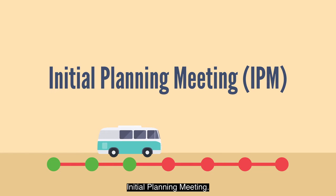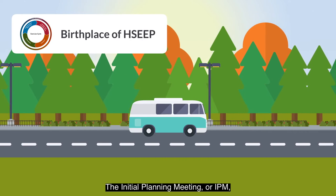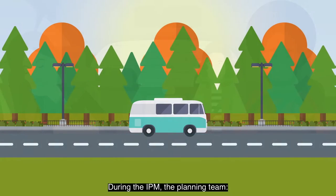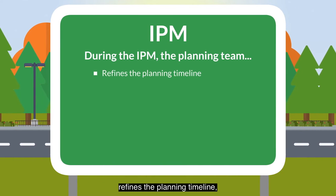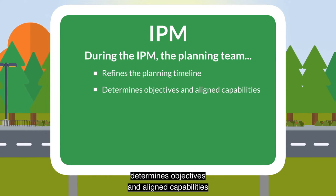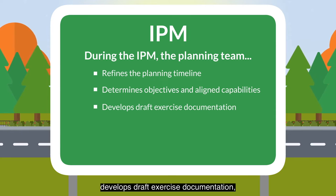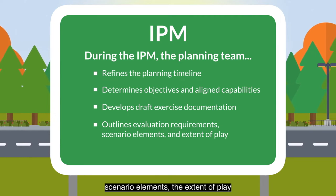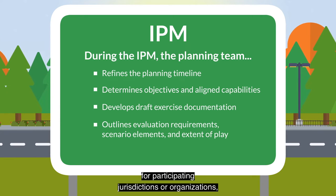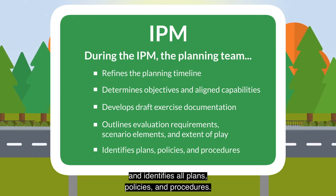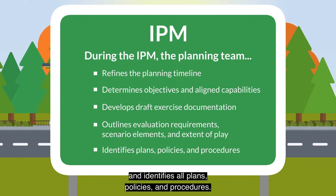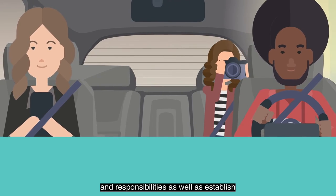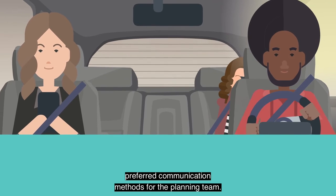The initial planning meeting, or IPM, focuses on refining the scope and objectives for the exercise. During the IPM, the planning team refines the planning timeline, determines objectives and aligned capabilities, develops draft exercise documentation, outlines evaluation requirements, scenario elements, the extent of play for participating jurisdictions or organizations, and identifies all plans, policies, and procedures. The IPM is an ideal time to clearly define roles and responsibilities, as well as establish preferred communication methods for the planning team.